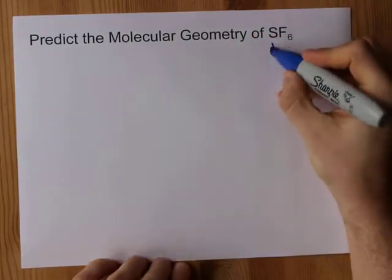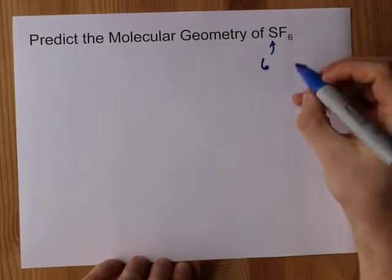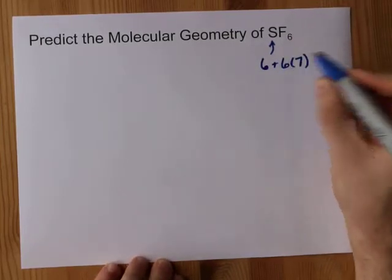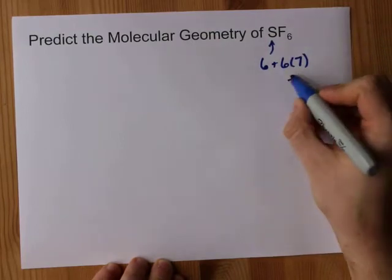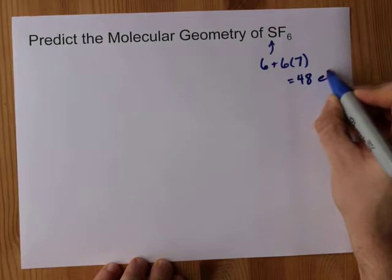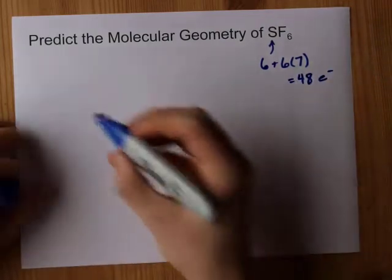Sulfur brings six valence electrons, and fluorine brings seven, but I have six of them, so that's 42 contributed. That gives me 48 electrons to be distributed around the Lewis structure.